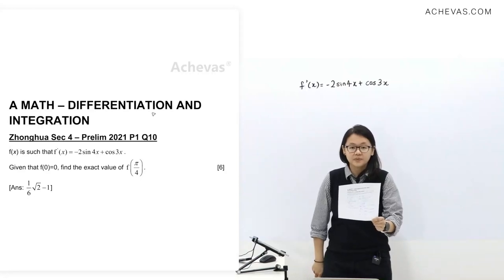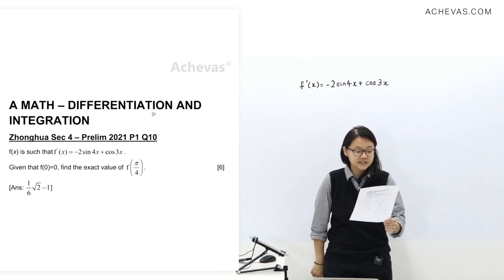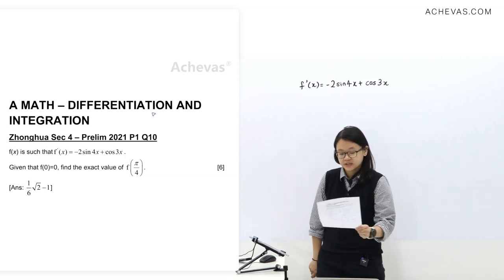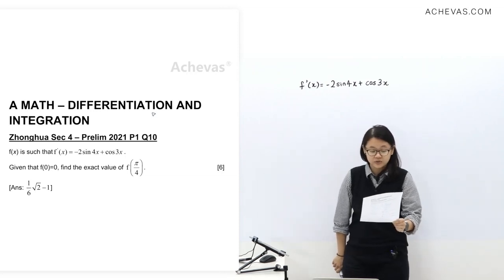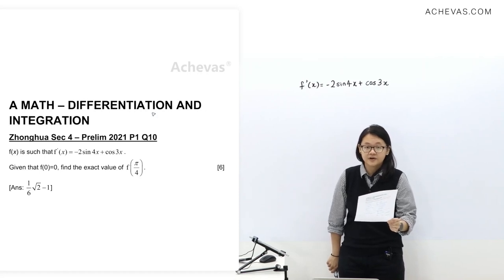Now let's take a look at Tsonghua Sec. 4, Prelim 2021, Paper 1, Question 10. f(x) is such that f'(x) equals negative 2 sine 4x plus cos 3x. Given that f(0) equals 0, find the exact value of f(π/4).